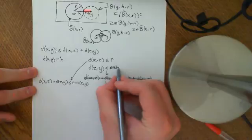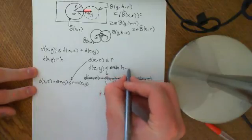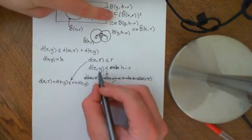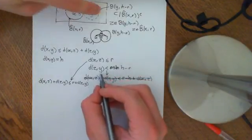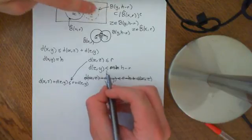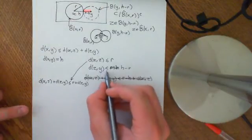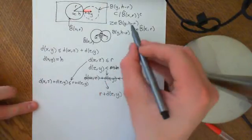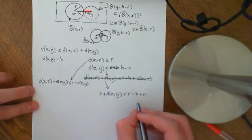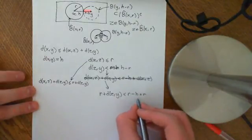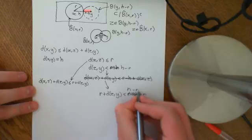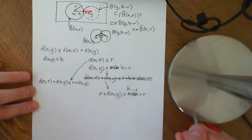Sorry, this should have been h minus r here, because the ball was of radius h minus r, so the distance between z and y was less than h minus r if z was an element of that ball. So just replace that with h minus r, which makes more sense, because we want the r's to cancel.